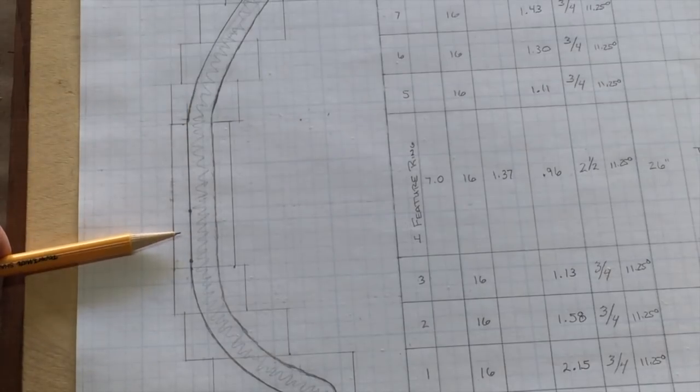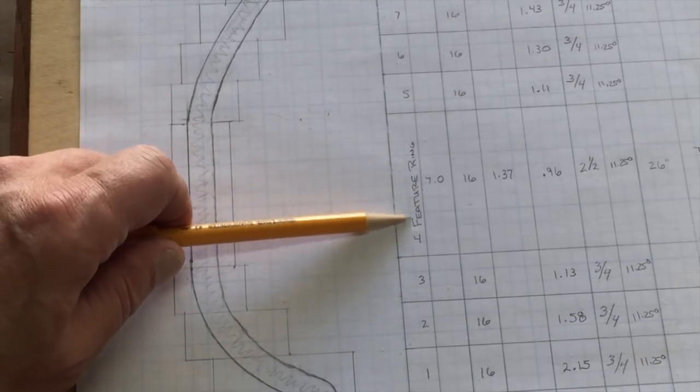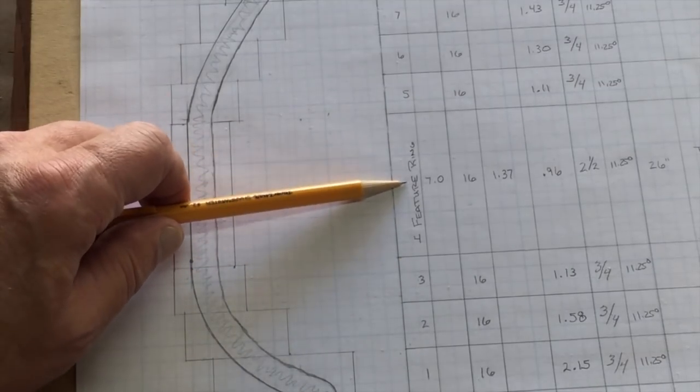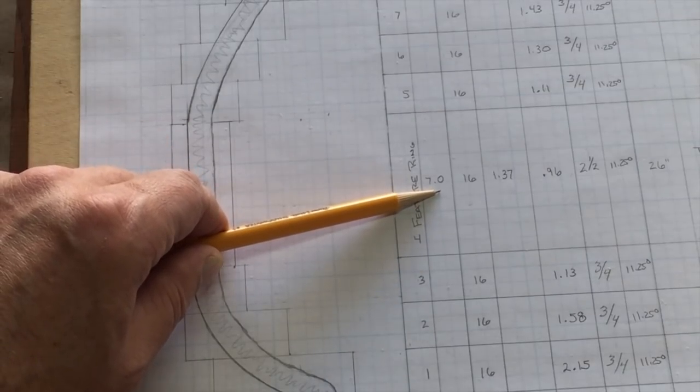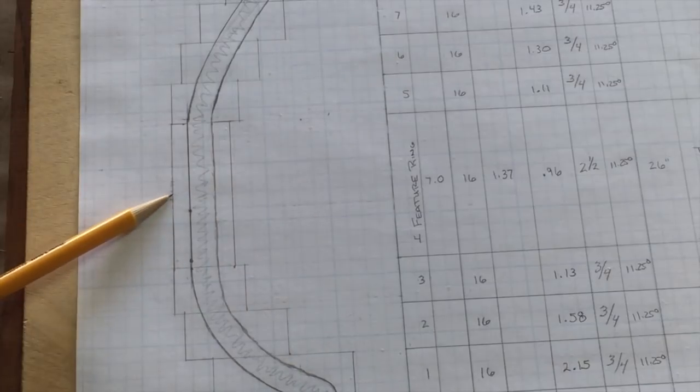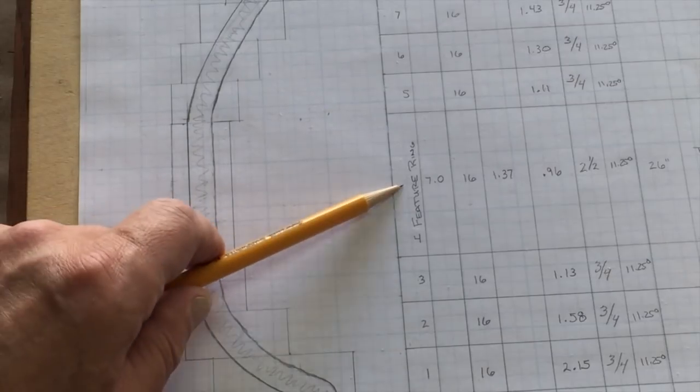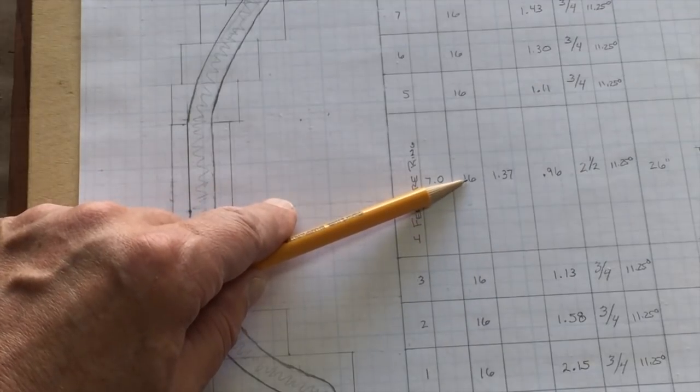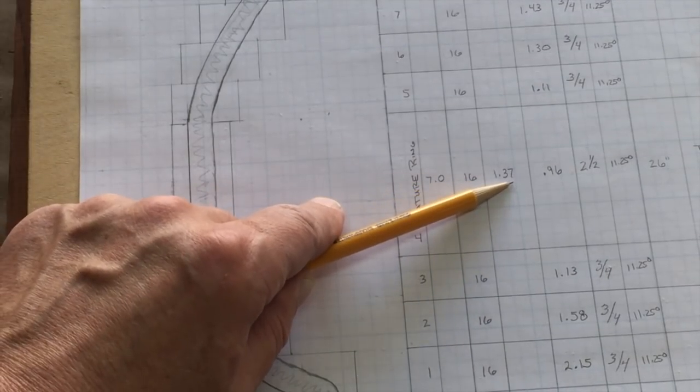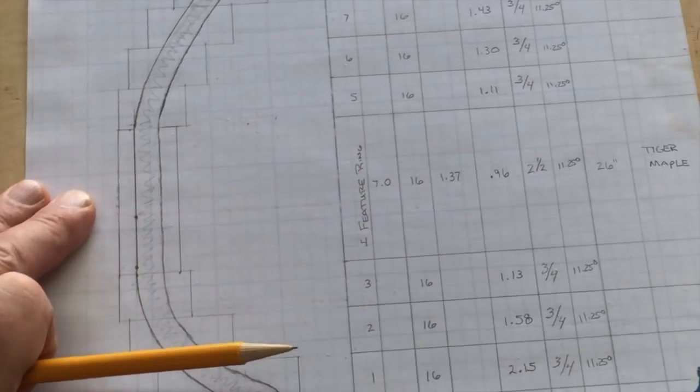This is going to be the feature ring, two and a half inches tall. The first column is the ring number, labeled as the feature ring. The second column is the radius - from the center line out to the outside of the piece, in this case seven inches. You gotta double it to get the diameter. There's going to be 16 segments in each ring.